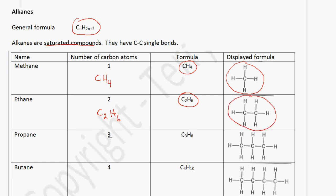Propane has 3 carbon atoms, so the formula will be C3H. Using the formula, it'll be 2 multiplied by 3, which is 6 plus 2, which gives us 8. So that's how we got C3H8. The displayed formula has 3 carbon atoms and 8 hydrogen atoms.